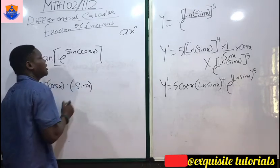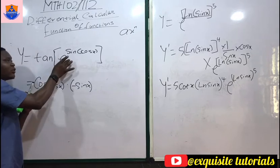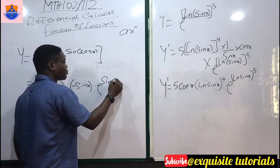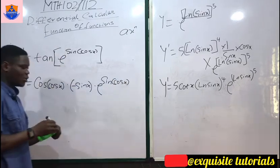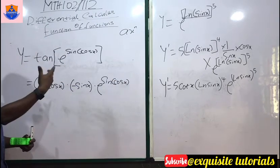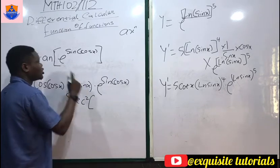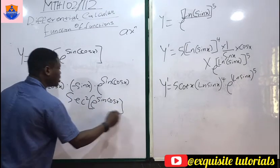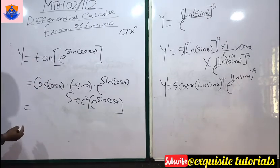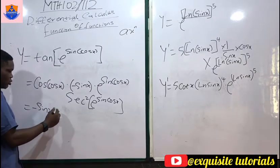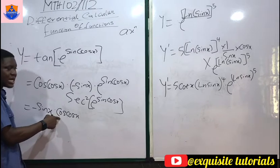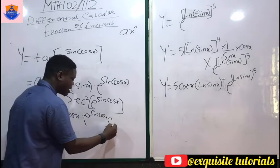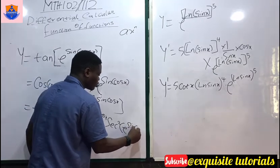Don't forget that differentiating the exponential function gives the exponential back, so multiply by e^(sin(cos x)). Lastly, differentiating tan gives sec², so we have sec²(e^(sin(cos x))). Combining everything: y' = −sin x · cos(cos x) · e^(sin(cos x)) · sec²(e^(sin(cos x))).